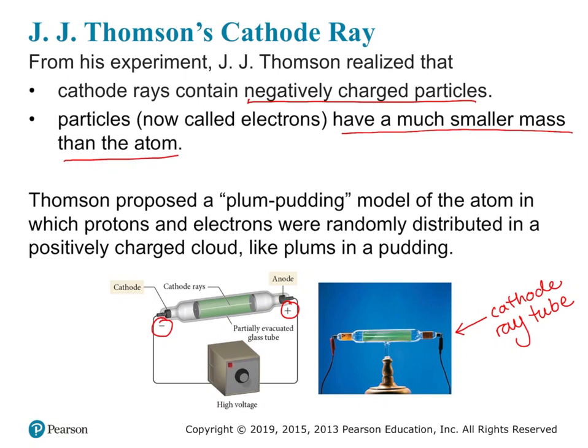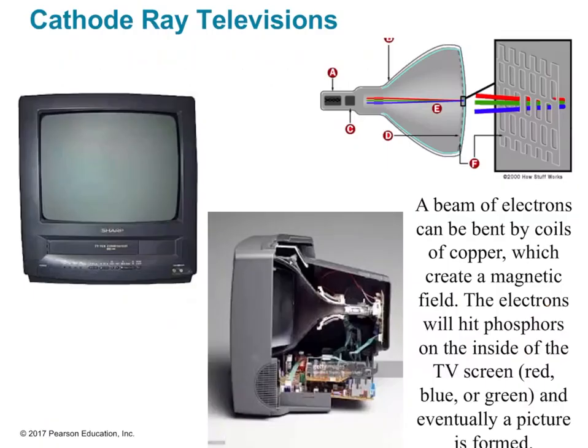From this, Thomson proposed something called the plum pudding model of the atom. He thought that protons and electrons were randomly distributed in a positively charged cloud.